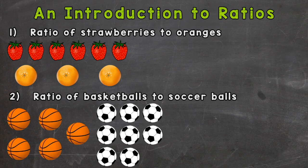As you can see, there are two example problems on your screen. We have the top problem with strawberries and oranges, and then the bottom with basketballs and soccer balls. Now when we're talking ratios, a ratio shows the relationship between different amounts. We're going to take a look at the quantity of one thing, the number of something, compared to the number of something else.